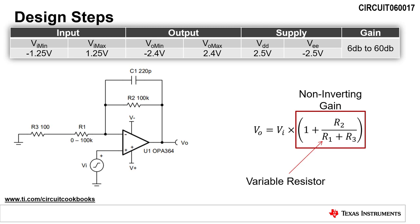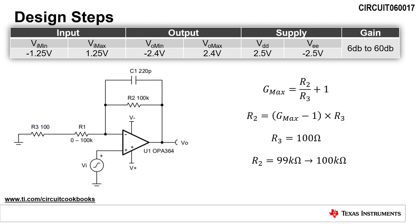The first design step is to calculate resistors R2 and R3 to set the maximum gain when R1 approaches 0 ohms. The maximum gain, Gmax, is equal to R2 divided by R3 plus 1. Rearranging this equation to solve for R2, we get Gmax minus 1 multiplied by R3. By selecting R3 as 100 ohms, we calculate R2 as 99 kilo ohms. Since 99 kilo ohms is not a standard value, we will use 100 kilo ohms, as shown in the schematic.